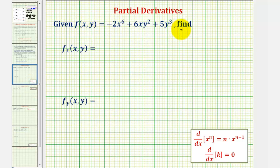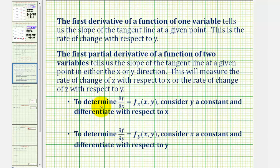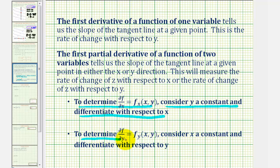We're given f(x, y) and asked to find the partial derivatives — first the partial derivative of f with respect to x, and then the partial derivative of f with respect to y. To determine the partial derivative with respect to x, we'll consider y a constant and differentiate with respect to x. And then to determine the partial derivative with respect to y, we'll consider x a constant and differentiate with respect to y.